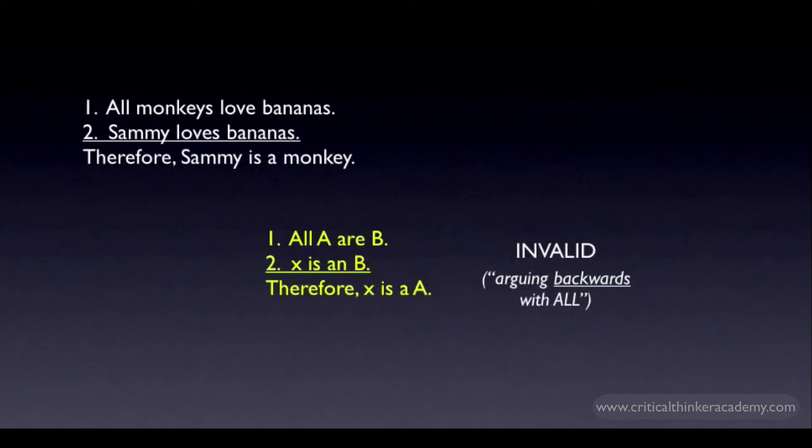Note that what makes the argument invalid has nothing to do with being a monkey or being a thing that loves bananas. Any argument that has this form is going to be invalid. What makes it invalid is the relationship between the categories that is being asserted and the relationship of the individual, X, to the categories.